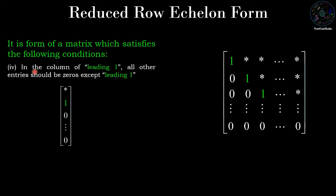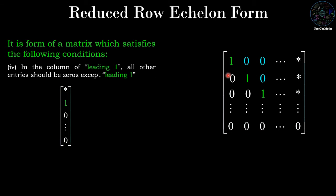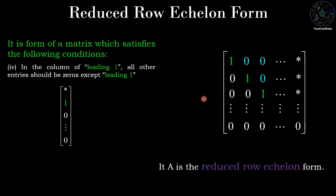Condition four: in the column of a leading one, all other entries should be zero except the leading one itself. We have three columns with leading ones. In the first column, except the leading one, all entries are zero. In the second and third columns, the star entries should also be zero. A matrix satisfying all four conditions is in reduced row echelon form.